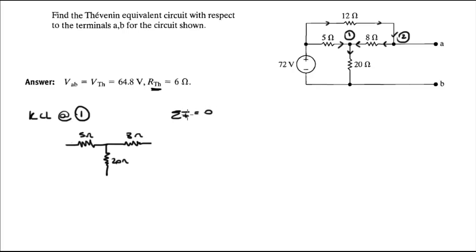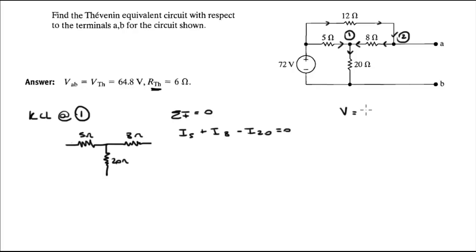KCL at node 1 states the sum of currents into the node equals zero. The current through the 5-ohm plus the current through the 8-ohm minus the current through the 20-ohm equals zero. The 20-ohm term is negative because current is leaving node 1. By Ohm's law, current equals voltage divided by resistance, so we label the node voltage V1.